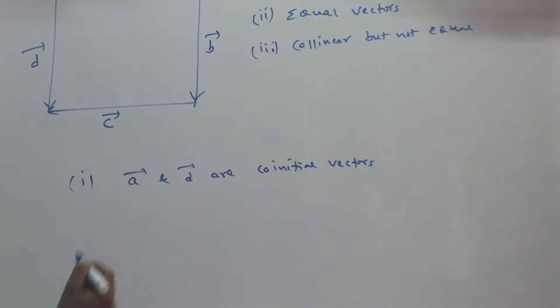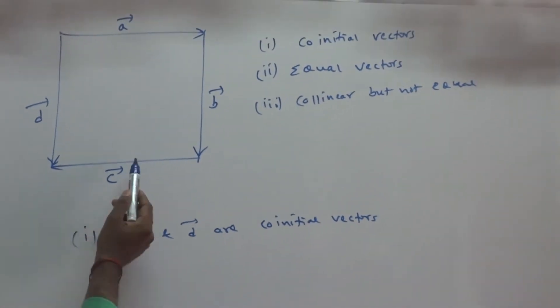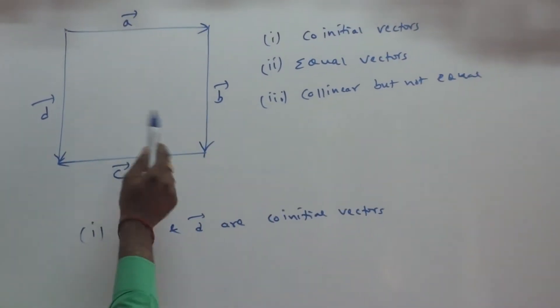Is there any other vectors, co-initial point is same? C and P are not equal. Initial points are different.